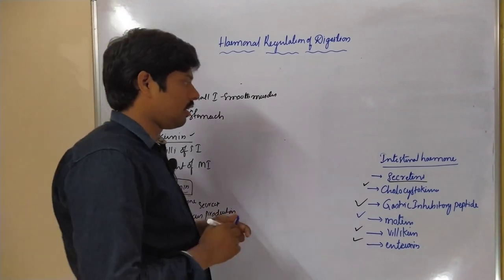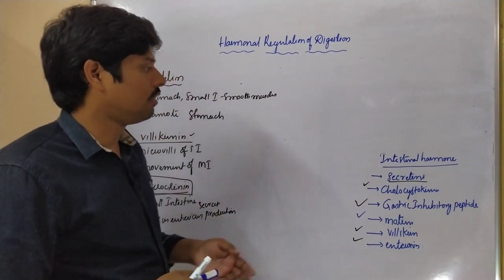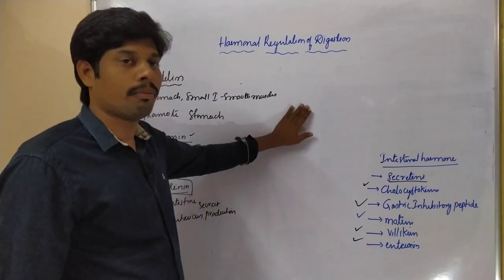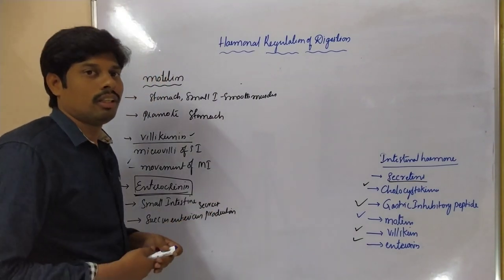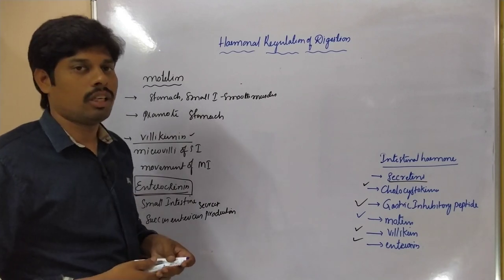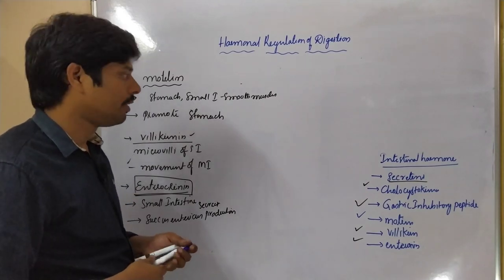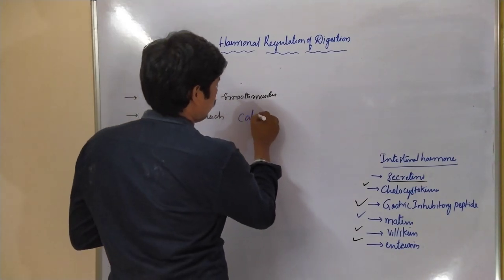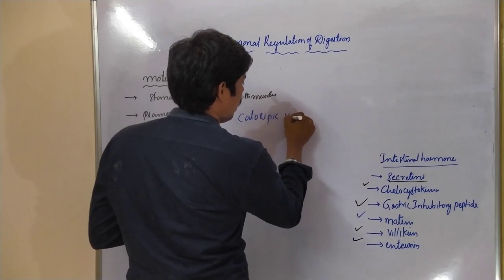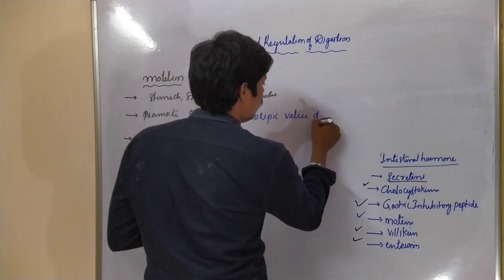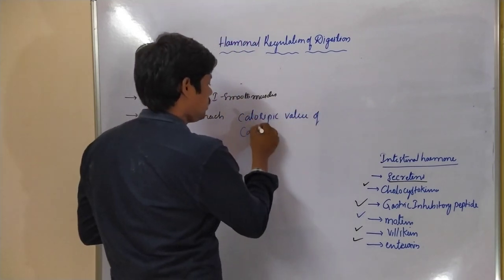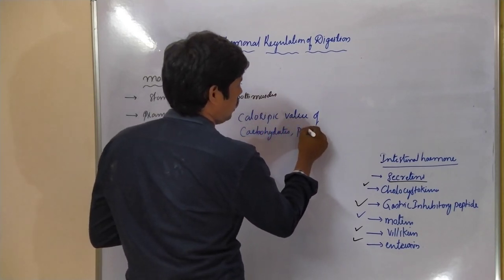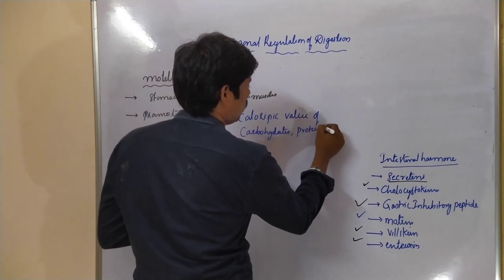These are the hormones associated with the cells present in the gastric and small intestine regions. The next topic is the calorific value of carbohydrates, proteins, and lipids.